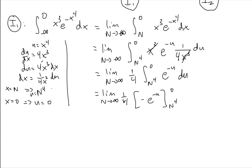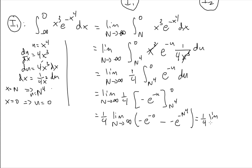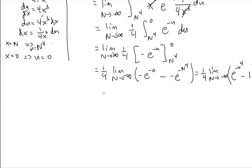Pulling the one quarter out front of the limit, we plug in our endpoints. Plugging in zero gives negative e to the zero, and plugging in n to the fourth gives minus negative e to the negative n to the fourth. Cleaning this up, we get one quarter times the limit as n goes to negative infinity of e to the negative n to the fourth minus one.